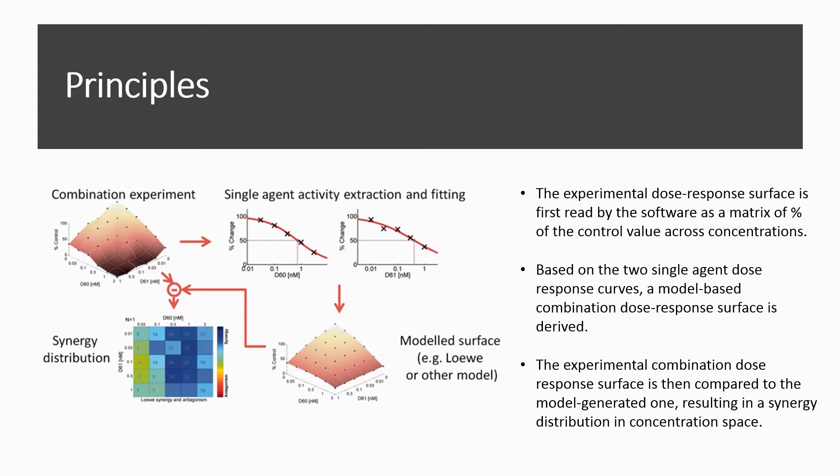Additionally, a new general model named Synergy, Antagonism, or Neutrality Estimation — or SANE model — has also been developed by the authors and incorporated into the platform. The approach implemented in ComBenefit can be summarized as follows. First, the experimental dose-response surface that delineates combination effects in concentration space is read by the software as a matrix of percent of the control value across concentrations. Then, the single-agent effects are extracted from this data and fitted with a dose-response curve. Based on the two single-agent dose-response curves, a model-based combination dose-response surface is derived. This surface provides a reference dose-response surface for a non-synergistic combination whose characteristics are determined by the selected model. Finally, the experimental combination dose-response surface is then compared to the model-generated one, resulting in a synergy distribution in concentration space. This synergy distribution can be further summarized via various metrics.